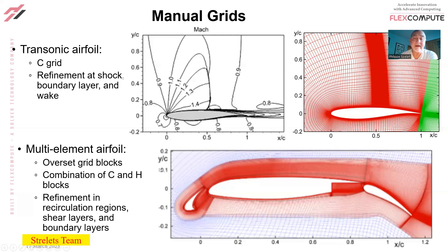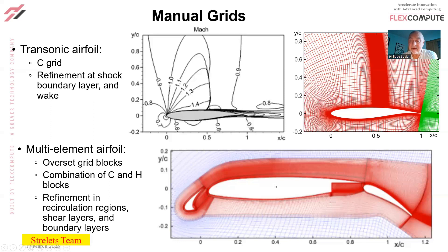More difficult is gridding a multi-element airfoil, and we're still in 2D. Here they used overset grid blocks — you can see the overset between the blue and the red, with interpolation back and forth between the two blocks. There's a C-block around the slat, and the outside blue block is also a C-block. But where the flap cuts inside the grid, it's an H-grid, so the grid lines don't wrap around the leading edge of the flap. These are very many decisions needed for complex geometry, with refinement planned in the recirculation regions behind the slat, the shear layers above the wing, and the boundary layers.